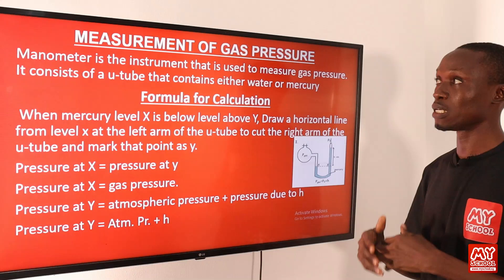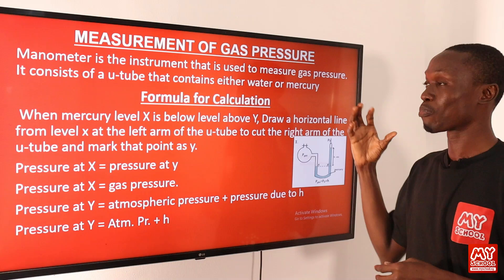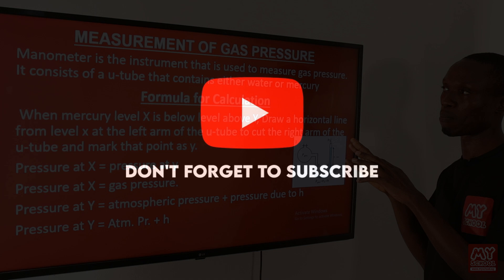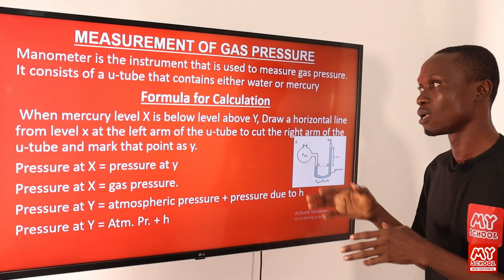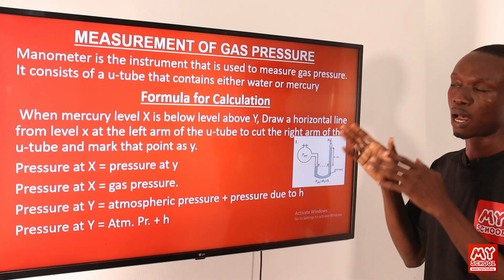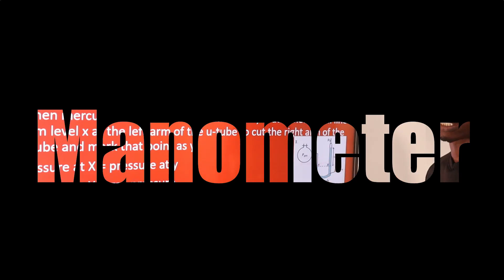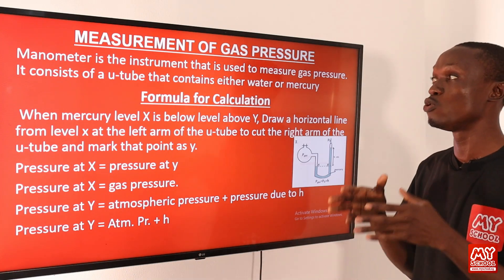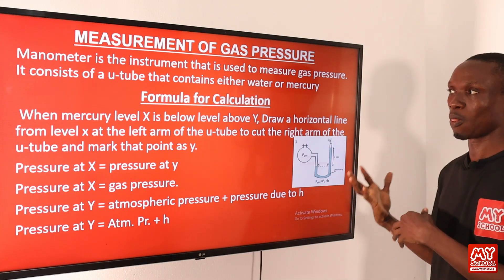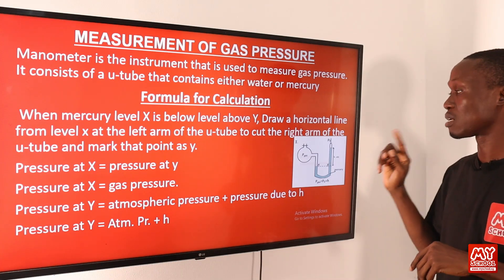On the next slide we are going to be discussing the instrument for measuring pressure. We explained a little about it in our previous video, so today we are just going to go through the formulas for calculation. The instrument for measuring pressure is known as a manometer, and this manometer consists of a U-tube that contains either water or mercury.